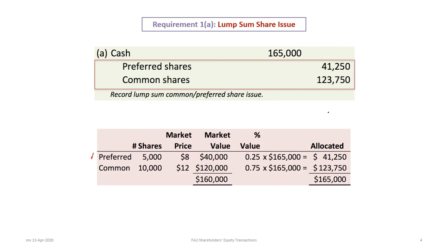According to the information, there are 5,000 preferred shares outstanding with a market price of $8, so the market value of the preferred shares alone is $40,000. There are 10,000 common shares with a market price of $12, giving a market value of $120,000. Combined, that's a total market value of $160,000. To determine the percentage each represents, we divide each by $160,000: $40,000 divided by $160,000 is 25%, and $120,000 divided by $160,000 is 75%. They must add up to 100%.